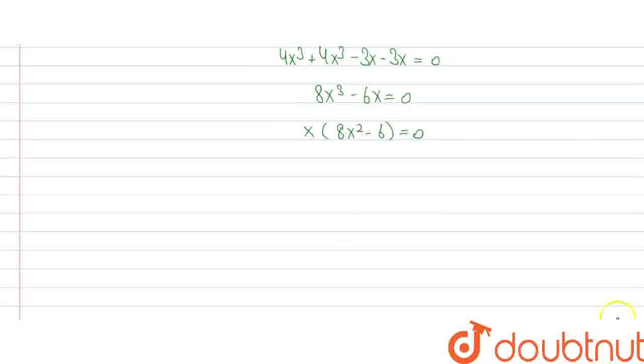On further solving, we will get three values of x from this equation. The value of x is equal to 0, and 8x² = 6, which gives us x² = 6/8, which means the value of x will come out to be ±√3/2.